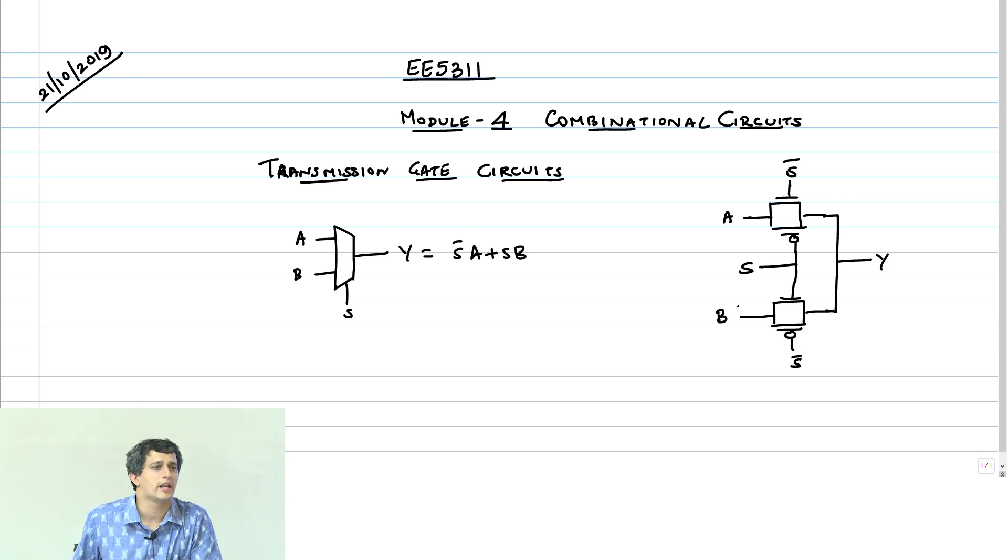The key thing that we are exploiting here—I will leave it to you to go and figure out how to implement the static CMOS version of let's say a 4 to 1 mux. You will see how complex it is, how many transistors you need, what the logical effort is and so on. The main thing that we are exploiting here is if a transmission gate is off, then the output goes to a high impedance state.